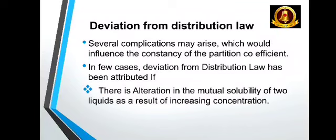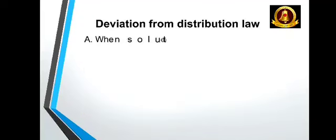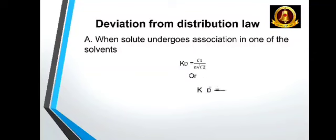If molecular states of solute get changed in the two solvents, the change in the molecular state includes when solute undergoes association in one of the solvents. That means Kd is equal to C1 by N square root of C2.